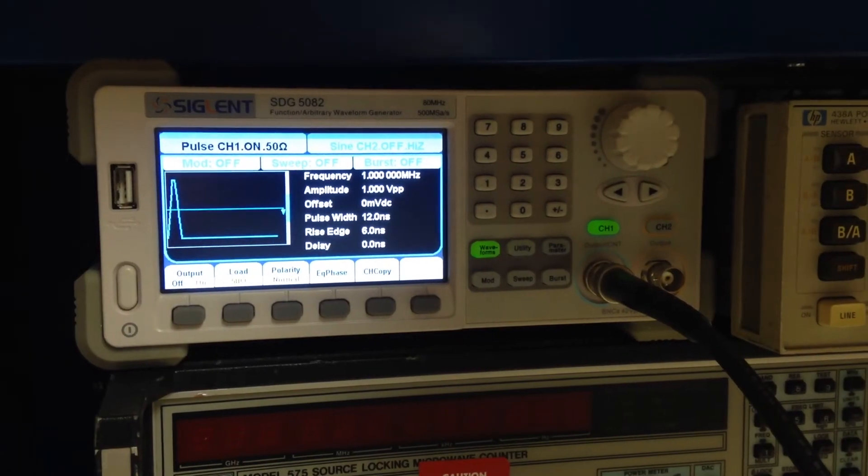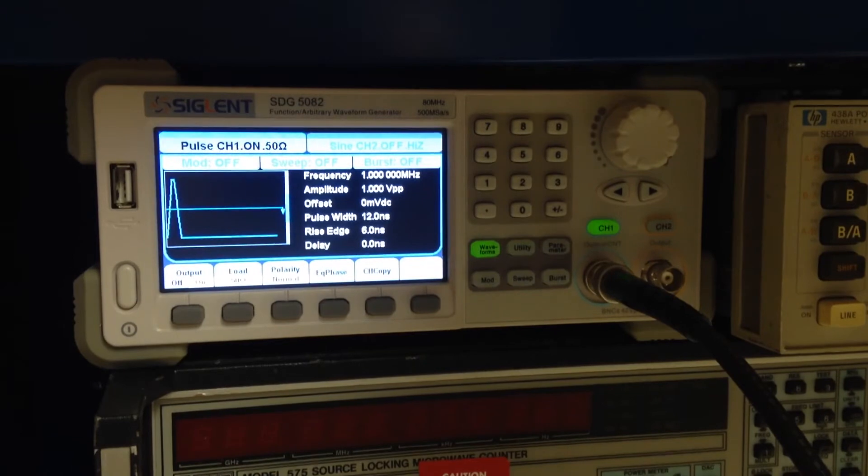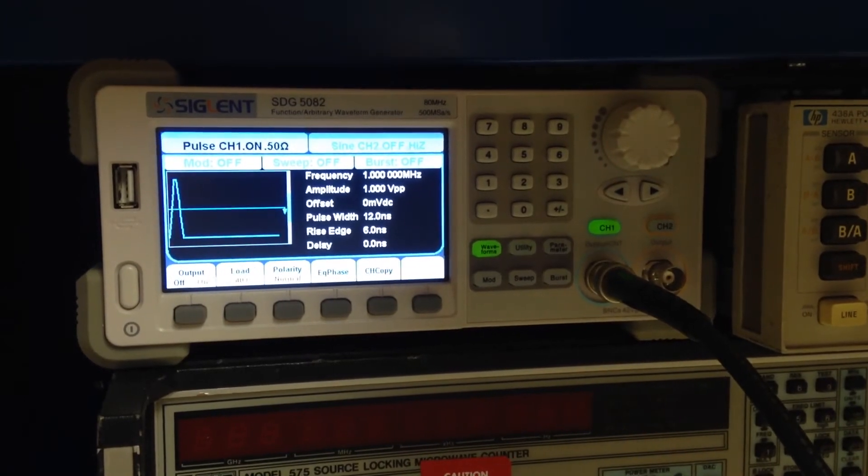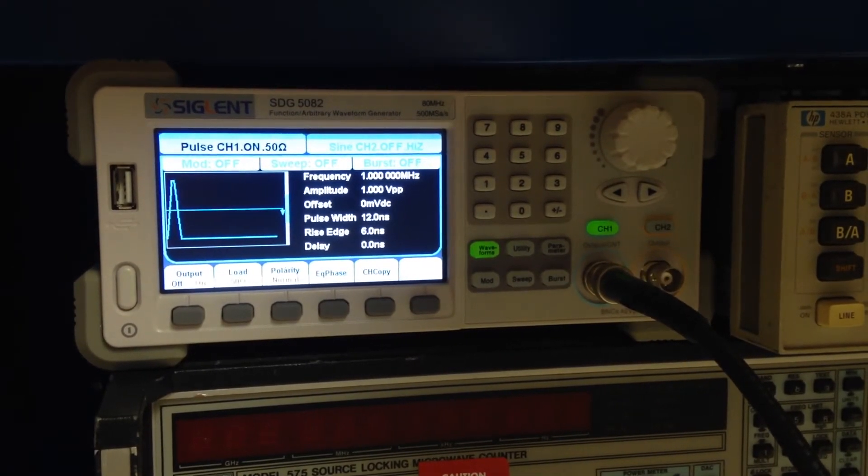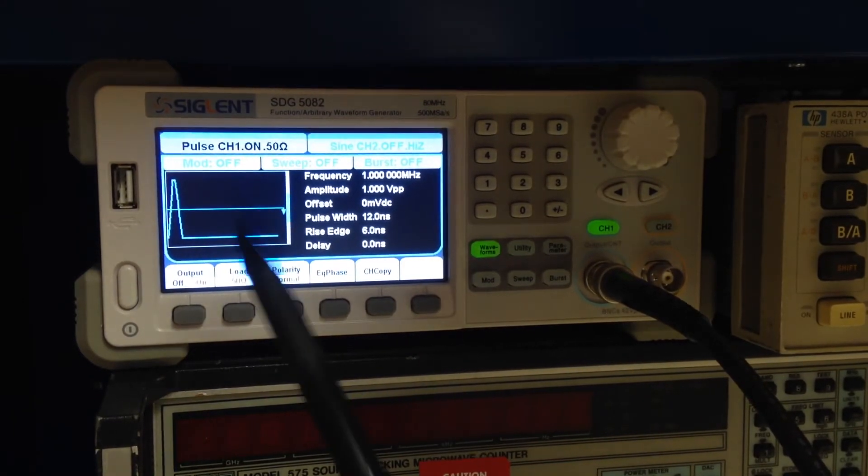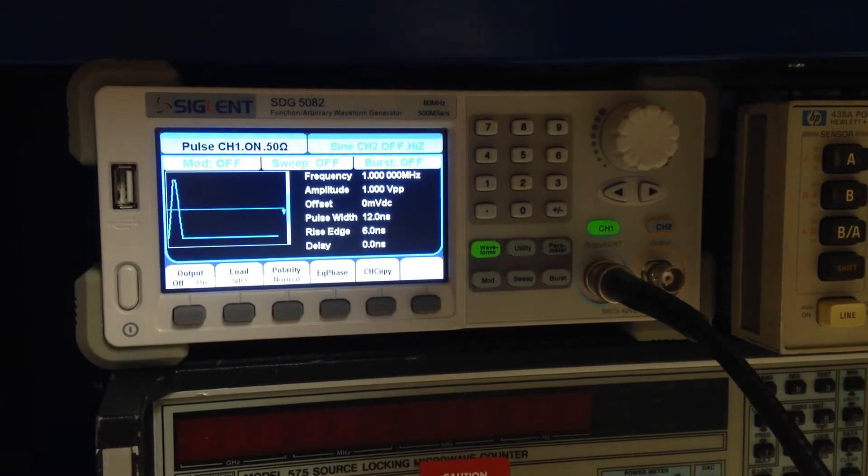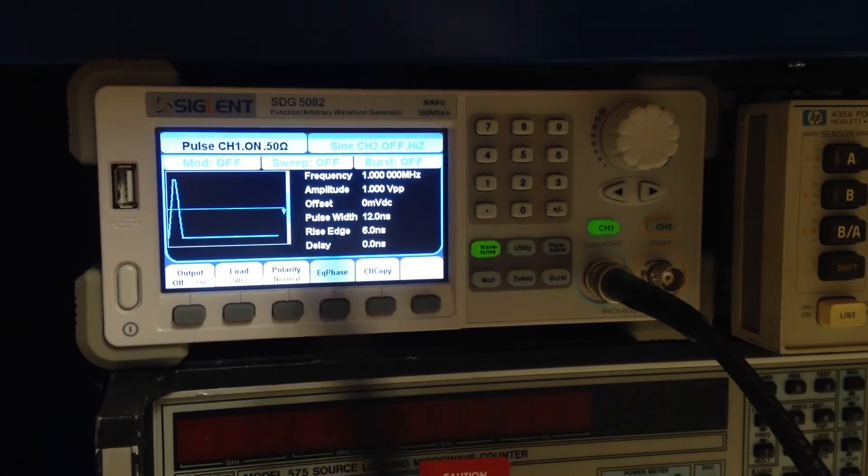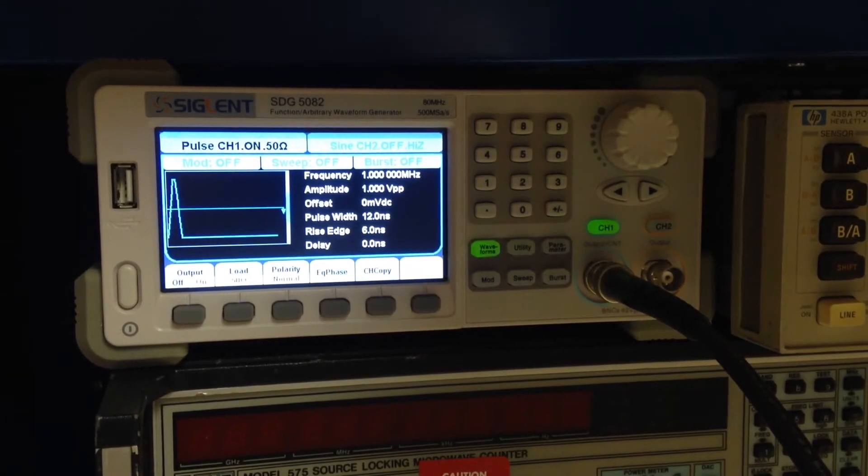This is a new pulse generator I picked up last week, and it just so happens that I ended up getting this cable about a week after I got this, so it's a good opportunity to try some TDR experiments. This is a Siglent SDG 5082. It's one of the new 5000 series Siglent generators. And the nice thing about this is that it allows you to do extremely narrow rising edges or pulse widths, even if you go to very low pulse rates.